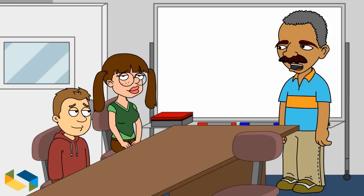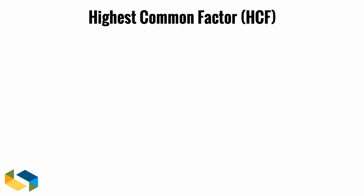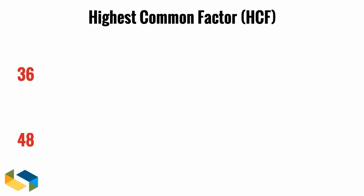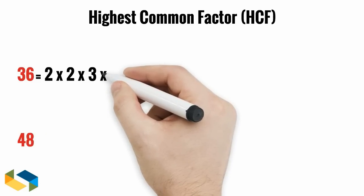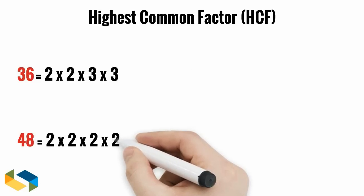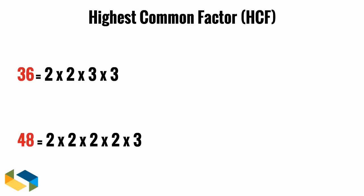Let's start with highest common factor or HCF. First, write down both these numbers as product of their prime factors. Just as we did for the number 56 earlier.